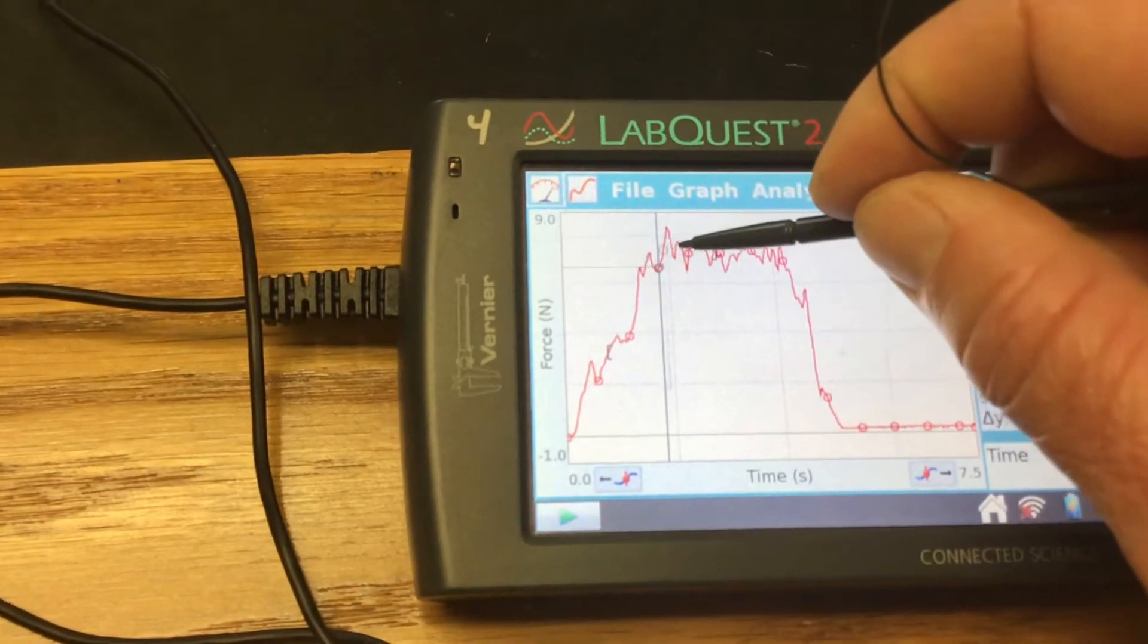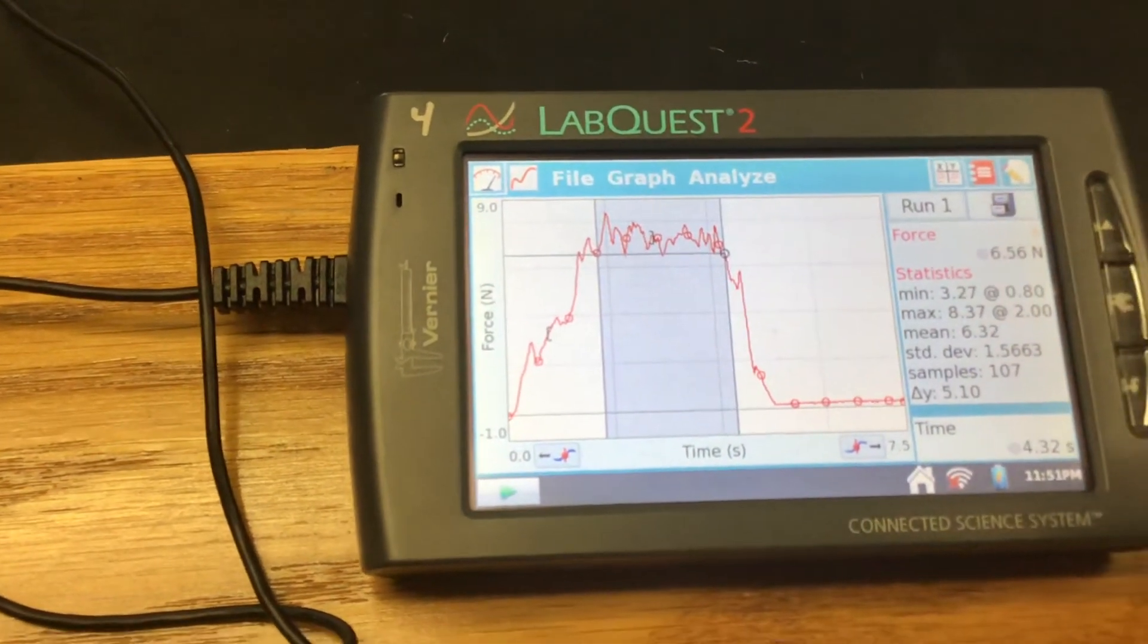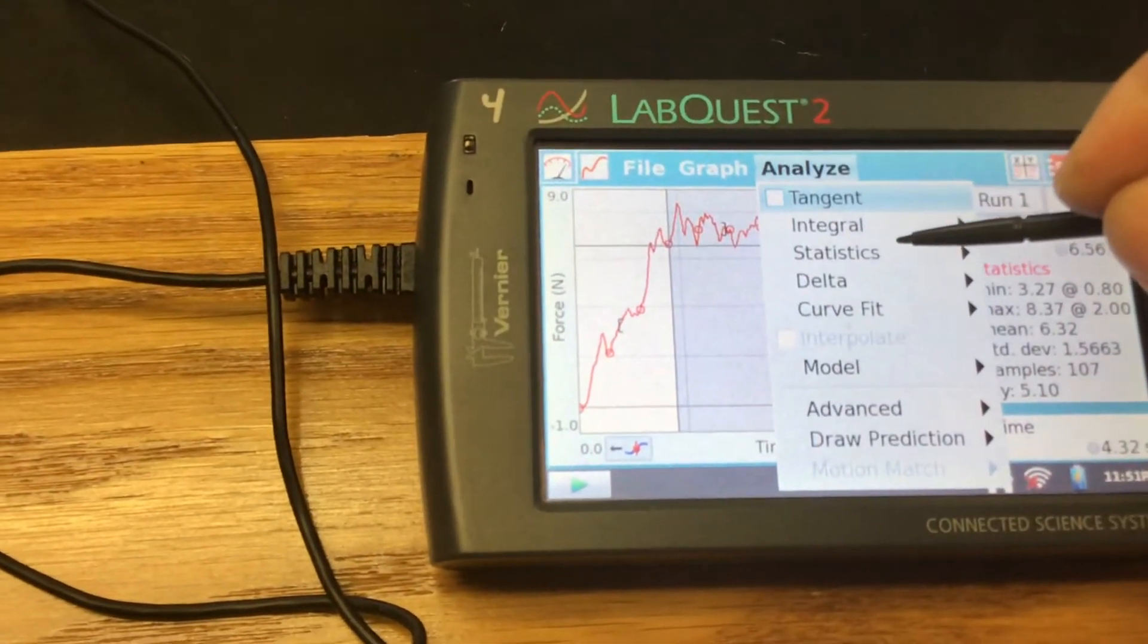Then what I'm going to do is read the rest of the graph where it was moving at a relatively constant speed. So I want to do the same thing.